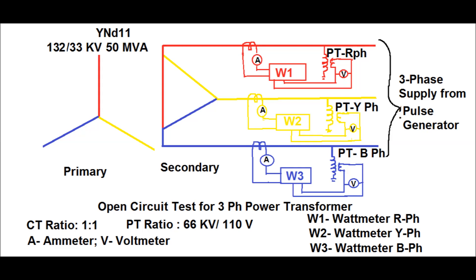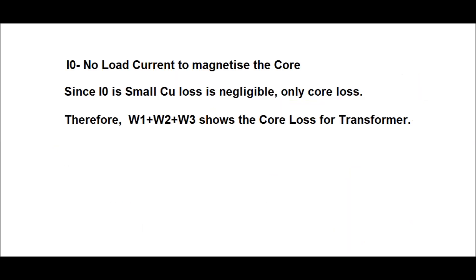Since the primary is open-circuited, the current taken from the LV side is very minimal — this is called the no-load current, which magnetizes the core. Because the no-load current is very small, copper losses will be negligible; the main loss is the iron loss. In the open circuit test, since the high voltage side is kept open, the no-load current I₀ — which is the magnetizing current — flows in the LV side. Therefore, the summation of W1, W2, and W3 gives the core loss or iron loss of the power transformer.